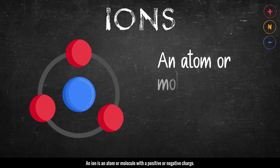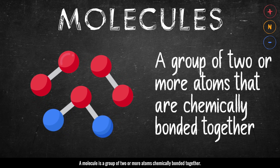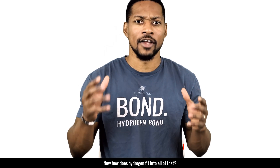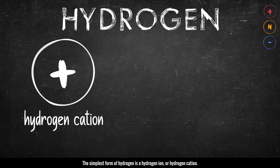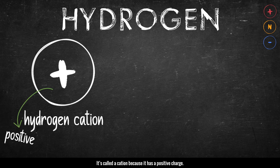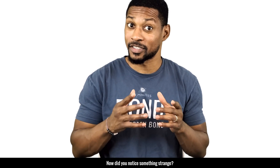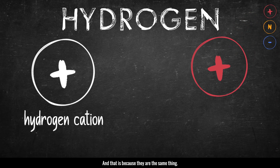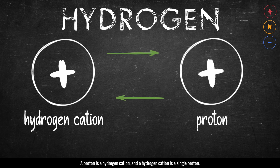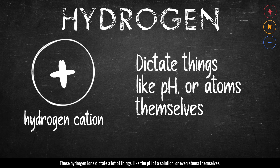An ion is an atom or molecule with a positive or negative charge. A molecule is a group of two or more atoms chemically bonded together. The simplest form of hydrogen is a hydrogen ion or hydrogen cation. It is called a cation because it has a positive charge. It goes by the abbreviation H+. A hydrogen cation and a proton look exactly alike, and that is because they are the same thing. A proton is a hydrogen cation and a hydrogen cation is a single proton. These hydrogen ions dictate a lot of things like the pH of a solution or even atoms themselves.